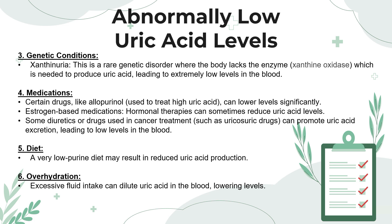At number three, we have genetic conditions, which includes xanthinuria — a rare genetic disorder where the body lacks the enzyme xanthine oxidase, which is needed to produce uric acid, leading to extremely low levels in the blood. At number four, we have the use of certain medications. Drugs like allopurinol, used to treat high uric acid levels, can lower levels significantly. Estrogen-based medications included in hormonal therapies can sometimes reduce uric acid levels, and uricosuric drugs used in cancer treatment can promote uric acid excretion, leading to lower levels on the blood report.